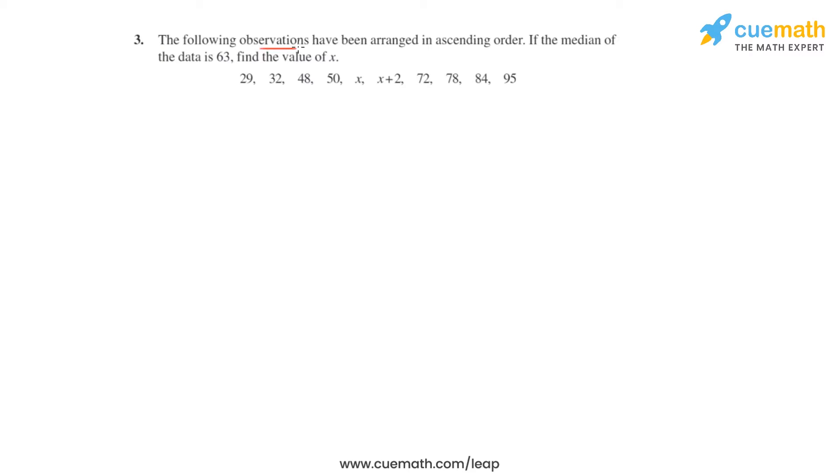Question number 3 says that the following observations have been arranged in ascending order. If the median of the data is 63, we have to find the value of x.